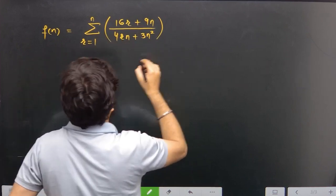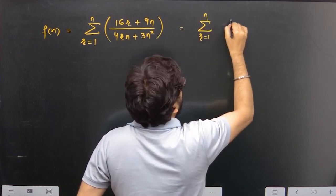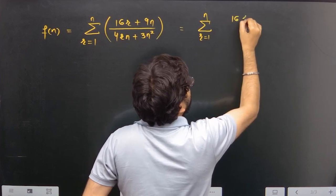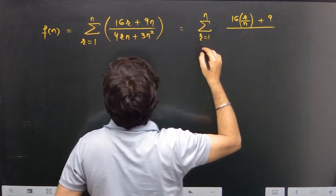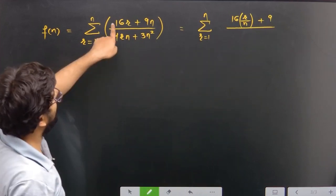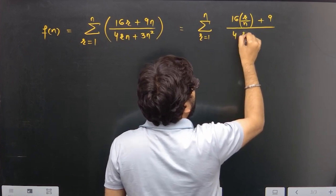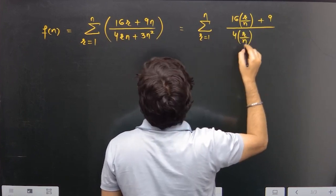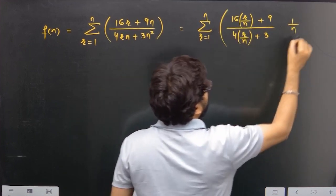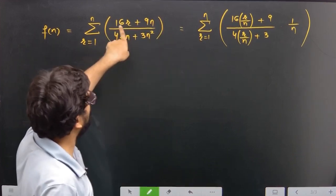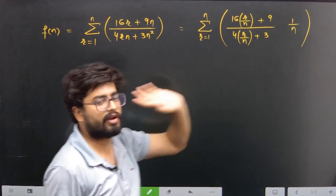So the sigma notation is: f(n) = Σ (r=1 to n) of (16r + 9n) divided by (4rn + 3n²). Taking n common from the numerator and n² from the denominator, we get Σ (r=1 to n) of (16r/n + 9) divided by (4r/n + 3), multiplied by 1/n.